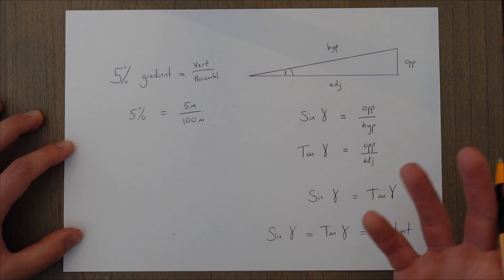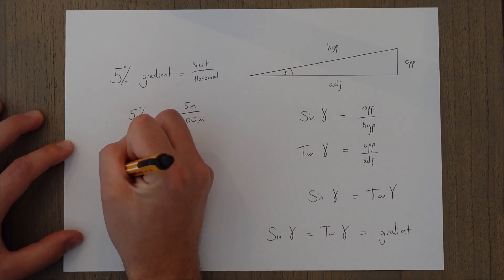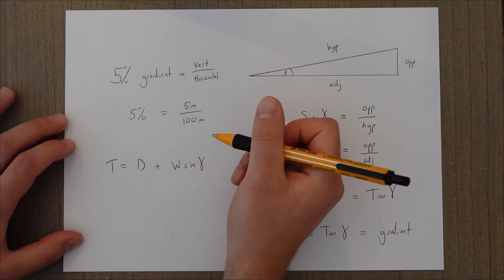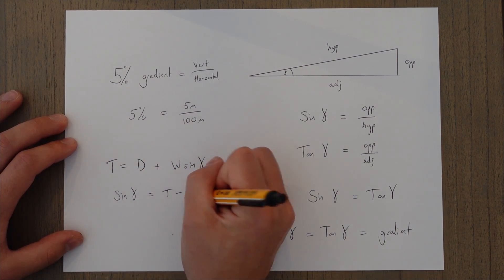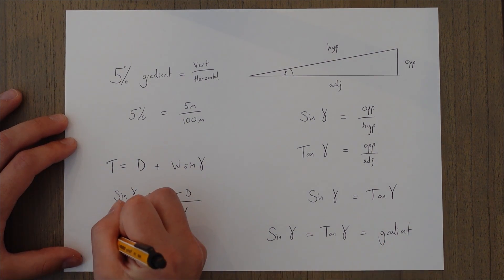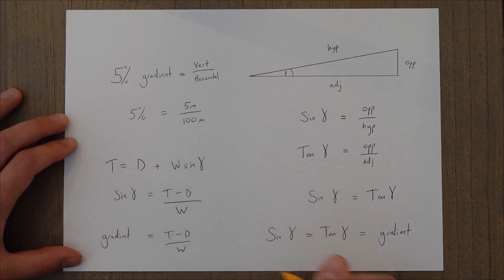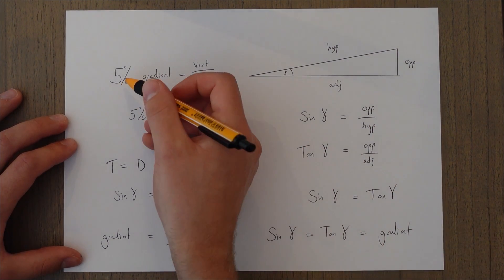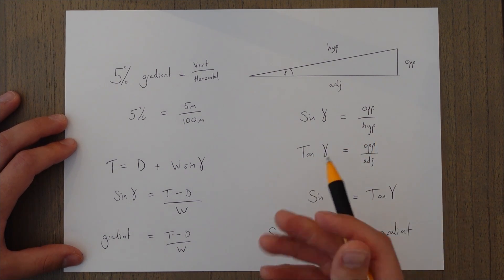Once we have this established, we can substitute into our climb equation. Thrust equals drag plus W × sine gamma. Rearranging: sine gamma equals thrust minus drag over weight. And since sine gamma is essentially the same as the gradient, our gradient equals thrust minus drag over weight. This gives an answer like 0.05, which you multiply by 100 to get the percentage gradient.